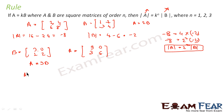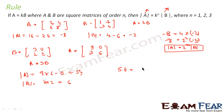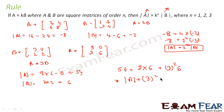Now if you find determinant of A, that comes out to be 9 into 6 minus 0 into 3, which is 54. If you find determinant of B, that is 3 into 2 minus 0, which is 6. So 54 is nothing but 9 into 6, and that is 3 squared into 6. So determinant of A is nothing but 3 to the power 2 into determinant of B.